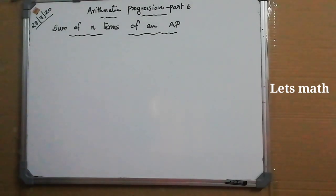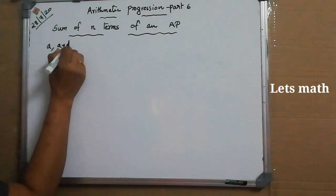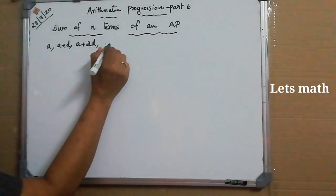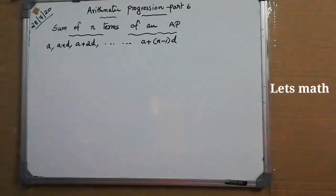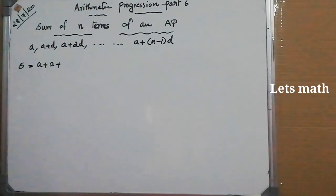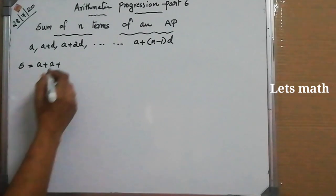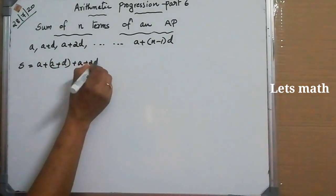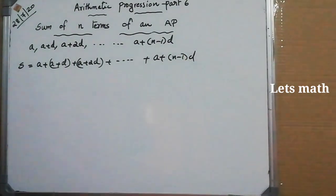Now the same technique is used to find the sum of N terms of any AP. The general terms of an AP are: A, A+D, A+2D, ..., A+(N-1)D. Let S equal the sum of all these terms: S = A + (A+D) + (A+2D) + ... + (A+(N-1)D).